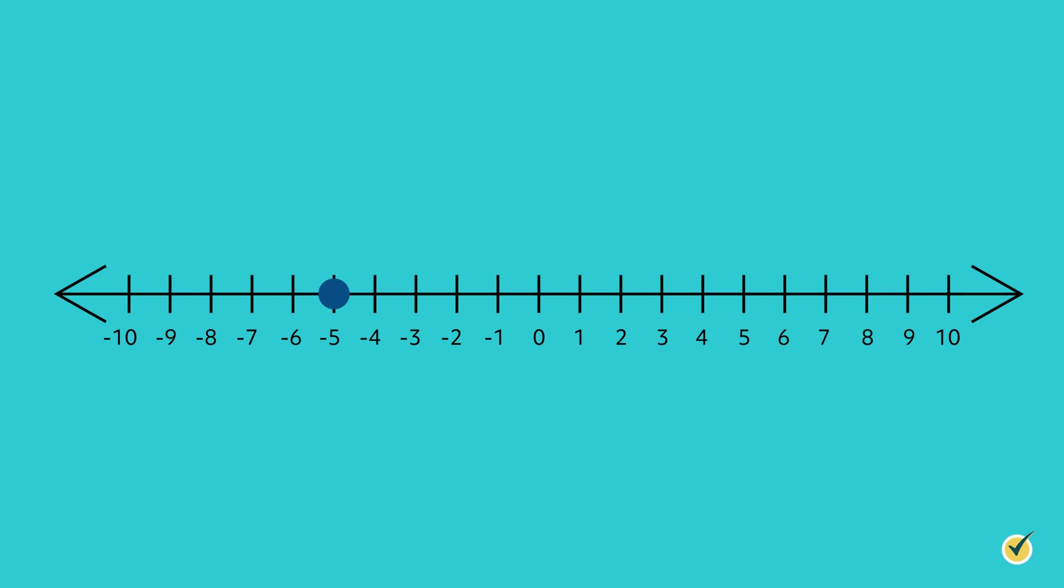We can also use a number line to help us add and subtract numbers. Movement to the right is for addition, and movement to the left is for subtraction. To use the number line for adding and subtracting, we start by plotting a point at our first number. Then we move right or left, depending on the operation, the number of spaces matching the second number.